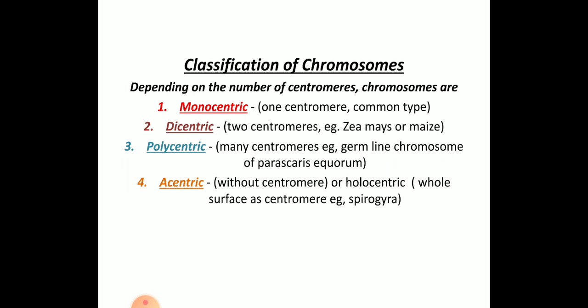Coming to the classification of chromosomes depending on the number of centromeres: if there is only one centromere present, that is called a monocentric chromosome. If they have two centromeres, it is called dicentric. If there are more than two, it is called polycentric. If there is no centromere, it is called an acentric chromosome. These are the two different types of classification of chromosomes — depending on the number of centromeres and the position of the centromere.